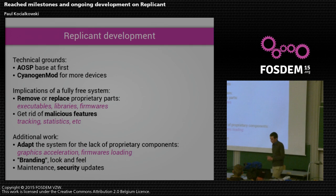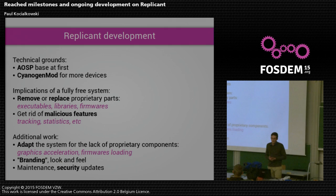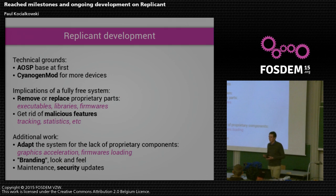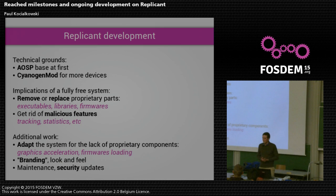The technical grounds for Replicant are the following. It first started as a derivative of AOSP — the Android Open Source Project — which is roughly the free version of Android that Google releases when they feel like it. Because sometimes they don't; if you remember, for Android version 3 they didn't release the source code and we had to wait for version 4. AOSP only supports a few devices, mostly the Nexus devices from Google.